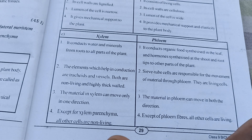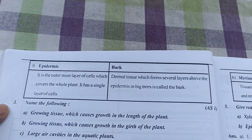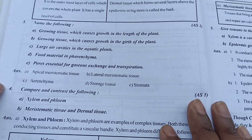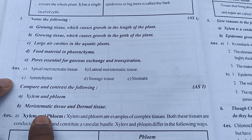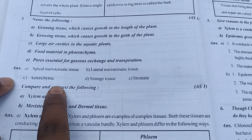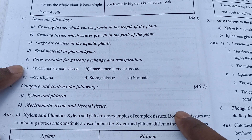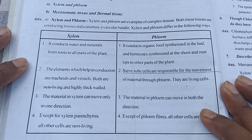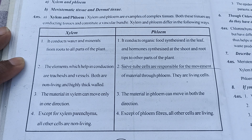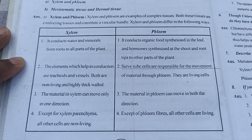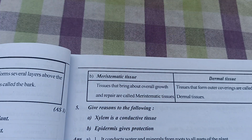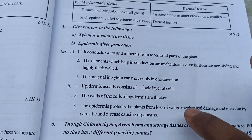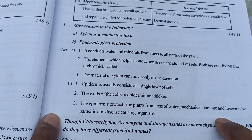Second question part F answer is here. After that, question three: 'Name the following' - the answers are apical meristematic tissue, lateral meristematic tissue, intercalary meristematic tissue, and stomata. Question four part A and B answers are here as well. Question five: 'Give a reason for the following' - answers for part A and B are given here.